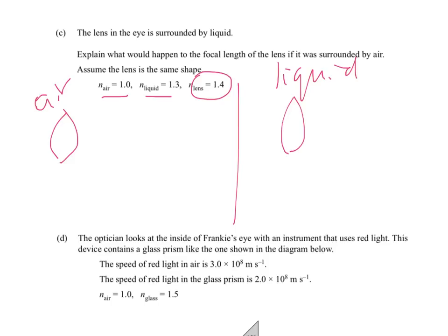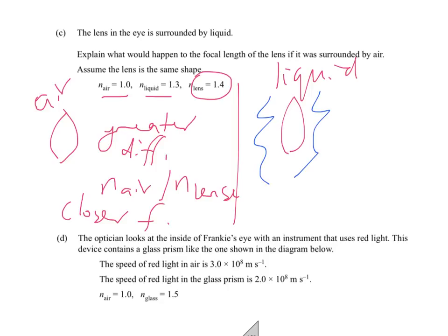In terms of the focal length of the lens, if it's surrounded by air, we've got a greater difference between the refractive index of the air and the refractive index of the lens. And that's going to cause greater bending. Greater bending means it has a closer focal length than in the liquid. If we look in the liquid, with the liquid sort of around the outside, there's going to be less difference between the refractive index of the liquid and the refractive index of the lens. So it's going to be a further or a longer focal point.